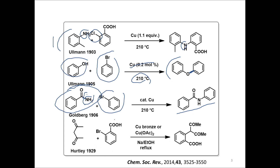The fourth example has a bromobenzene derivative with a carboxyl group at the ortho position, and a compound where the CH₂ is very acidic — that's where the coupling takes place. Actually, this is a carbon-carbon bond forming reaction, so this is not a good example of Ullmann coupling. I need to check this reaction again; please just ignore the fourth example for the time being. The first three examples give you a good idea of Ullmann coupling.